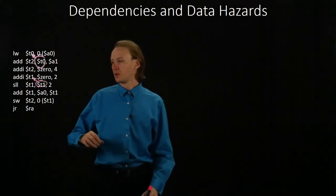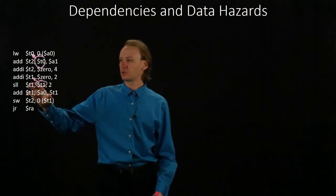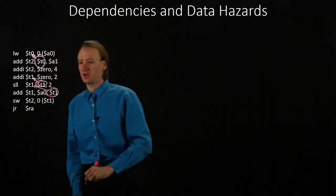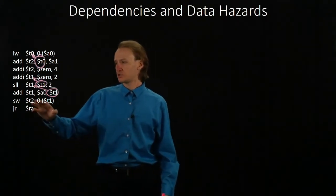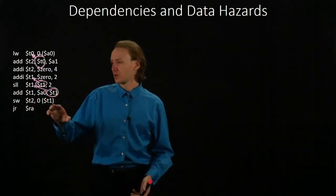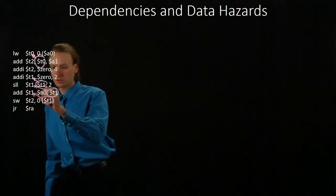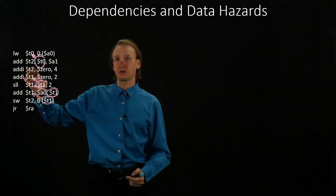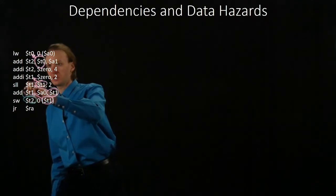Then we've got our add instruction. The add instruction is dependent on T1, which we updated in the shift-left logical instruction, so we'll have a dependency there. The add instruction is also dependent on T2, as well as the address in T1. We updated T1 in the add instruction, so there's a dependency there. And we updated T2 back in our first add immediate instruction, so we'll also have a dependency there.